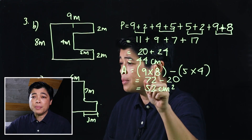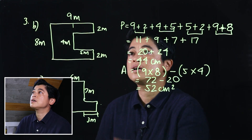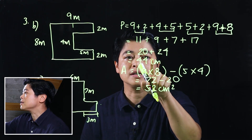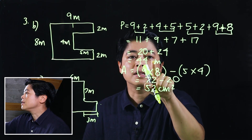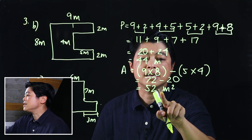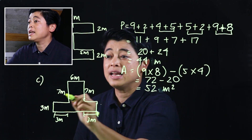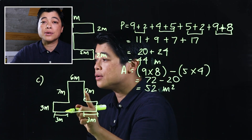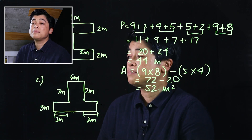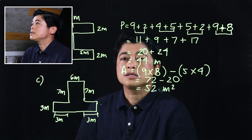Be careful with units: this figure is in meters, not centimeters, so remove the 'c'. For perimeter the unit is meters, and for area it's meters squared.